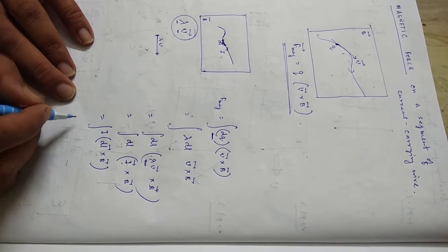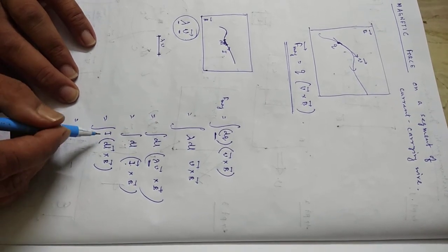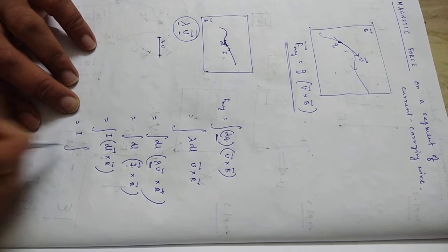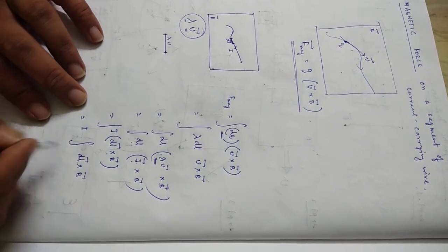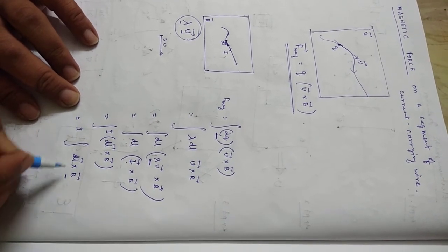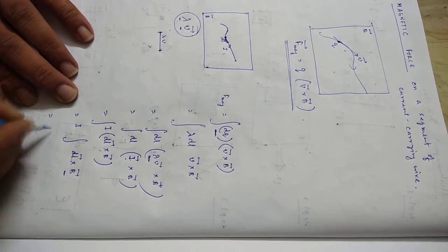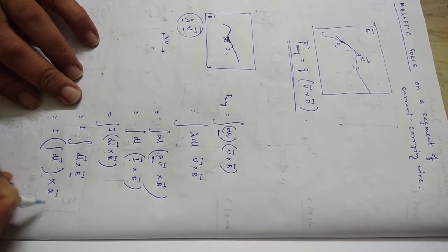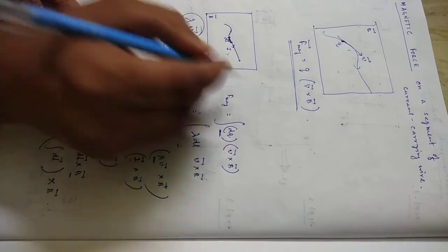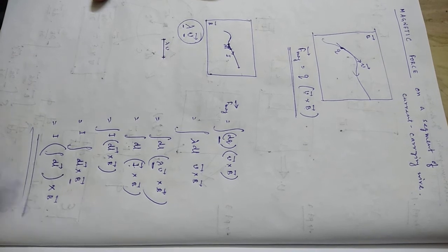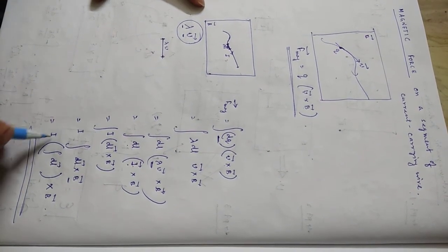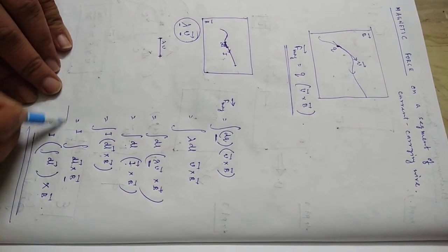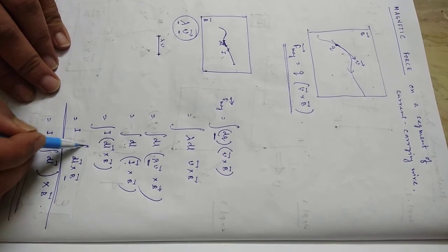If you have a steady current, that means I does not change over the whole current segment, so I can come out of the integration: I times the integral of DL cross B. And if you also have a uniform magnetic field, then B also comes out of the integration, giving the final result: F = I times L cross B. This is the expression for the magnetic force on a current segment. If the current is not steady or the magnetic field is not uniform, you must keep the full integral form.